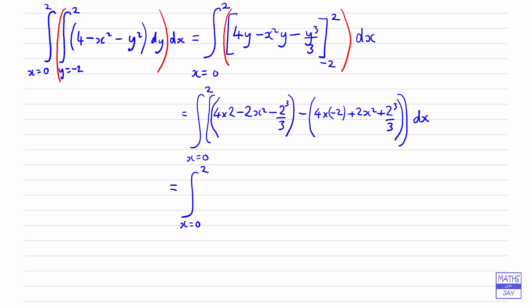we will have 8 and 8 will be 16. And then we're taking away 2 lots of 8 over 3. So we end up with 48 minus 16 all over 3. So that will be 32 over 3. So that's the constant part there. And then we're taking away 2x squared twice. So we've got minus 4x squared.